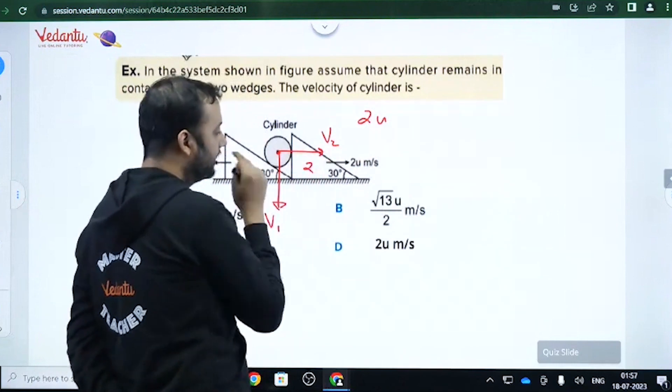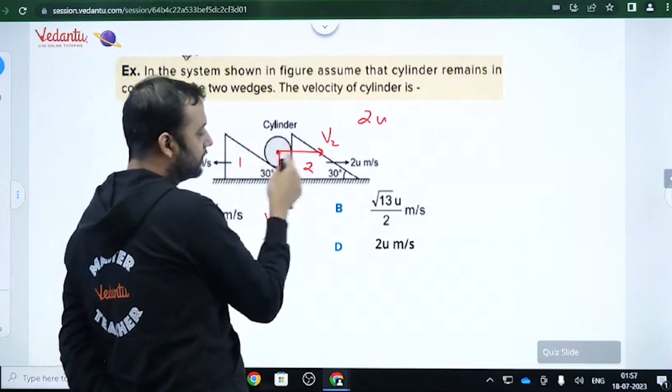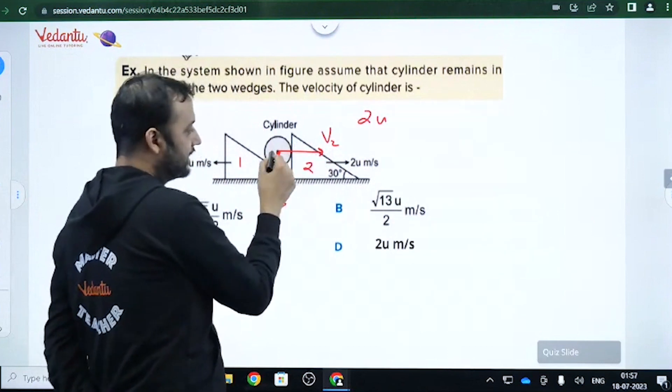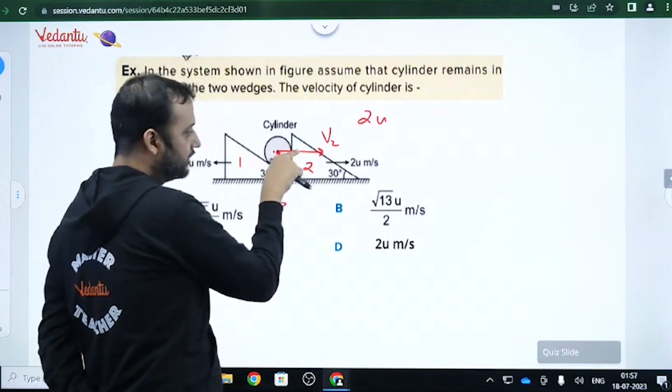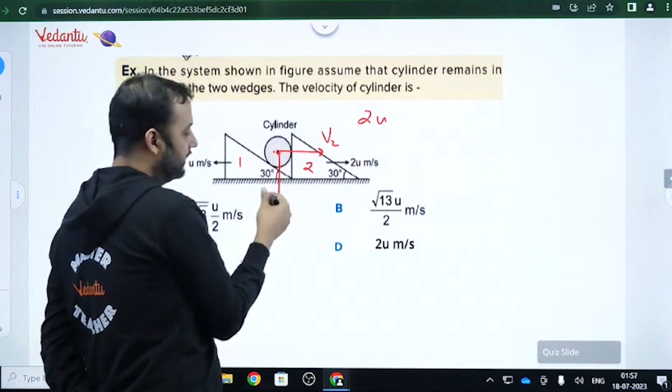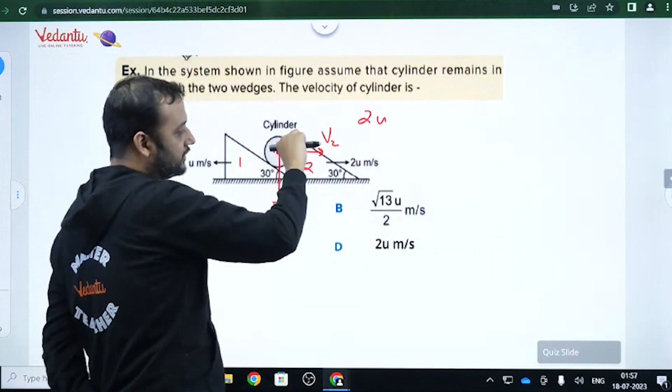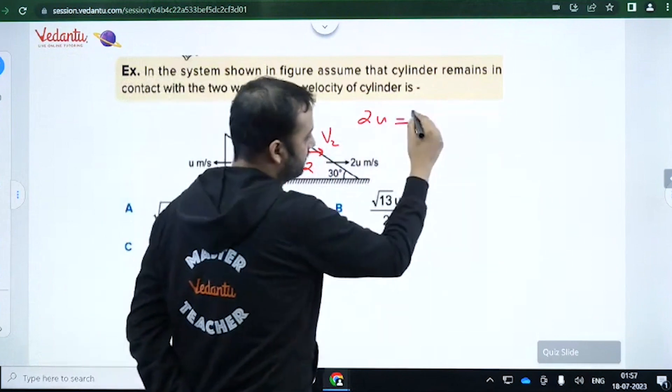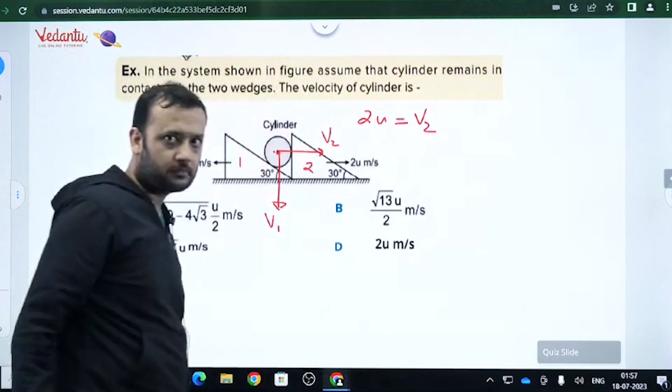Wedge 2 has a velocity of 2u along the common normal. What is the velocity of cylinder along the common normal? The cylinder has a velocity of v2, so v2 contributes fully, but v1 does not have any component. The component of v1 is 0 along this axis, but v2 has full component. So this 2u should be equals to v2.